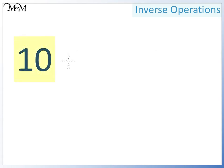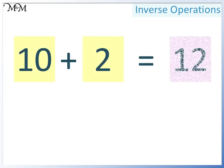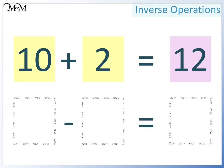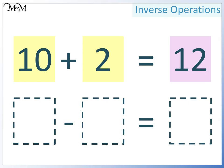For example, 10 plus 2 equals 12. Two smaller numbers add together to make a larger number. Remember, the inverse of addition is subtraction, so let's write this as a subtraction calculation. Because we are subtracting, we need to have the biggest number at the start.